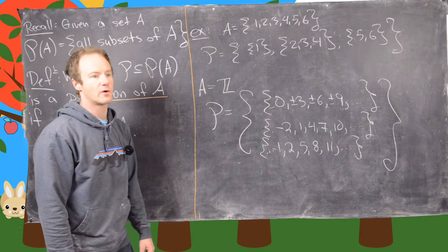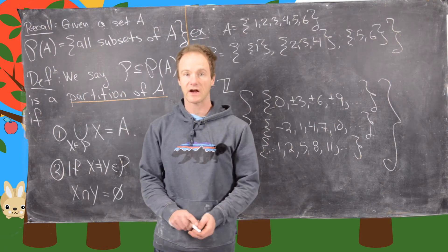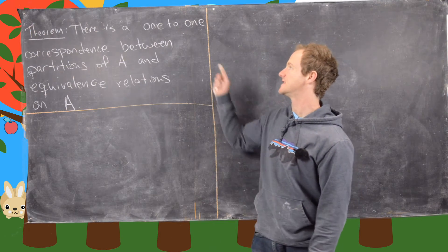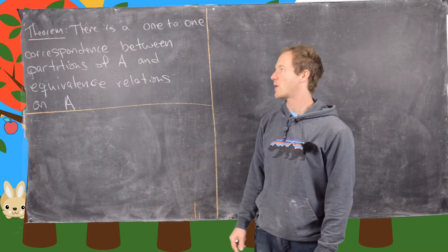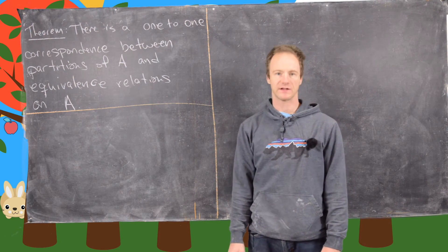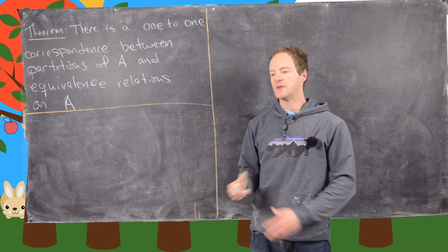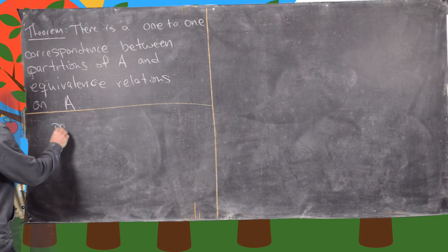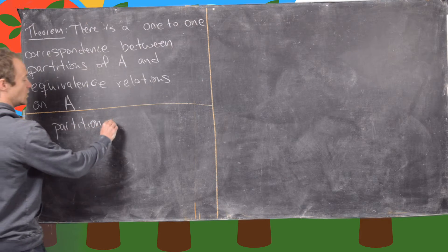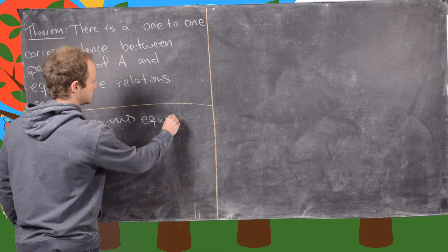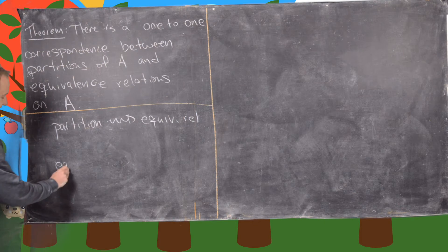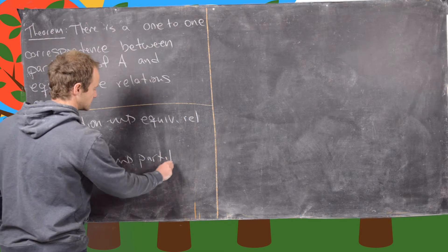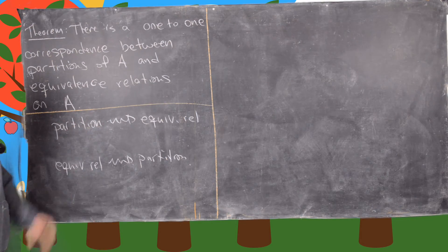So now we want to look at a really important result involving equivalence relations and partitions. There is a one-to-one correspondence between partitions of a set A and equivalence relations on a set A. In other words, these are equivalent notions: a partition gives rise to an equivalence relation, and vice versa — if we start with an equivalence relation we can form a partition. These are two sides of the same idea.